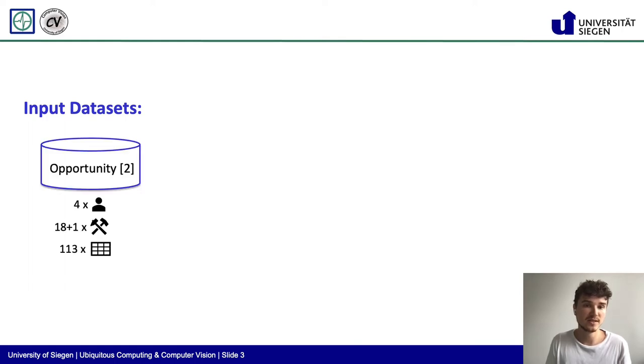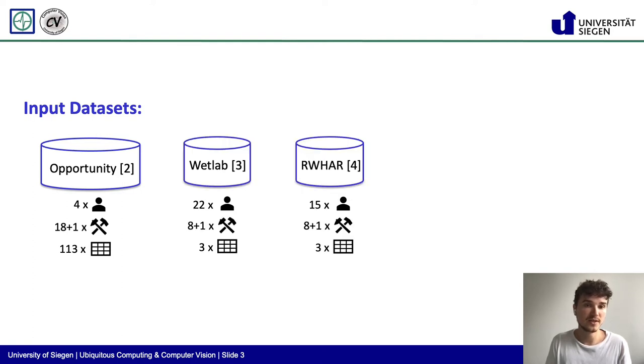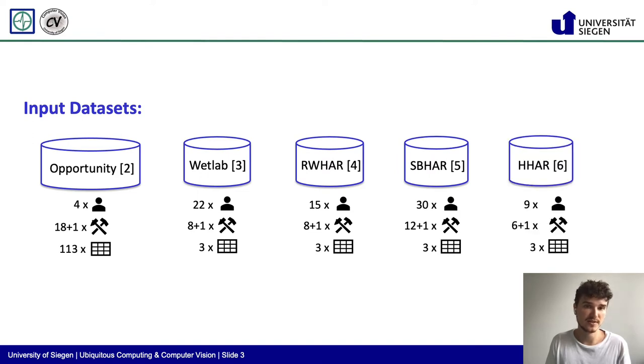These datasets were the Opportunity dataset, the WetLab dataset, the RealWorld HAR dataset, the SBHAR dataset, and the HHAR dataset. The datasets differ in the amount of participants, number and type of activities, and number of features being employed.